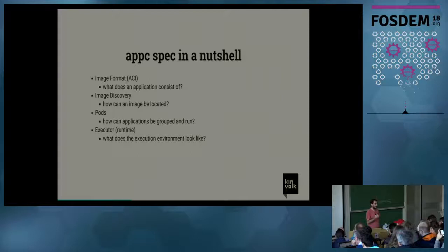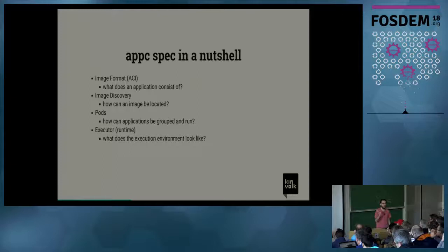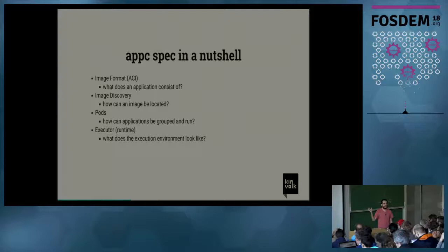The AppC also defines image discovery — how you can go from an image name to an image artifact, the tar archive I was talking about. It reuses the DNS system, so if a container is named corporation.com/whatever, it will go to that website, which will have metadata telling you where the actual artifact is. That's cool because it's distributed and doesn't require a centralized registry.